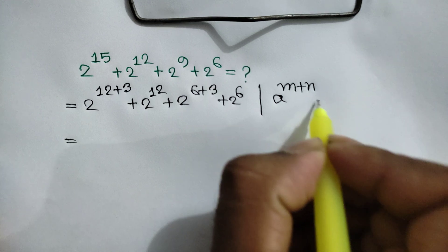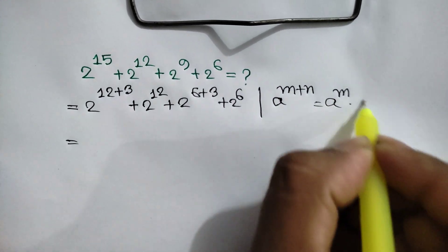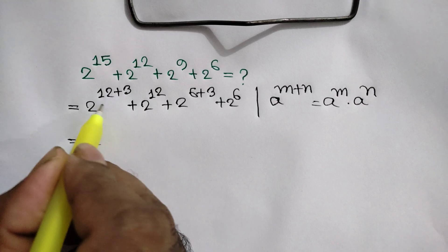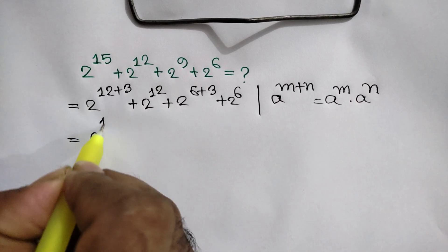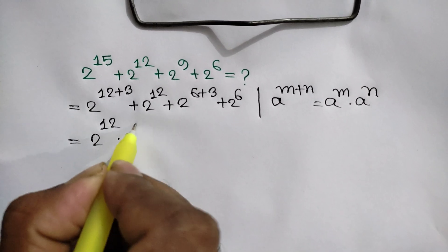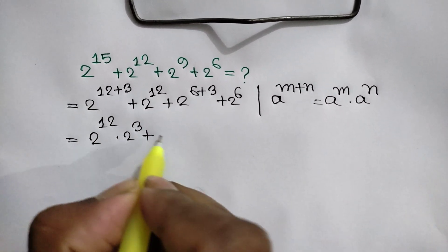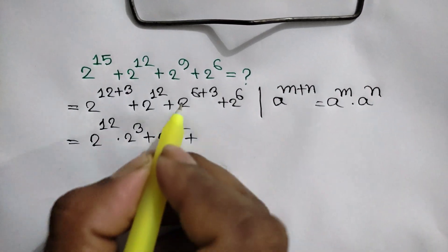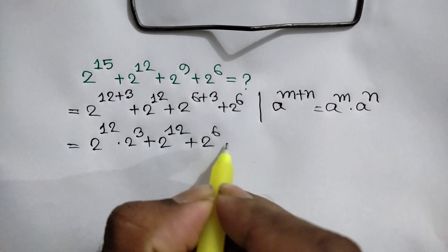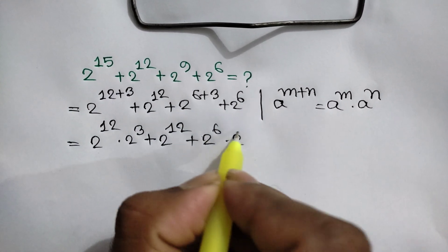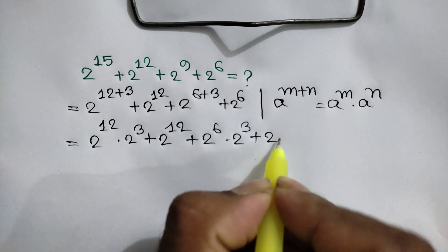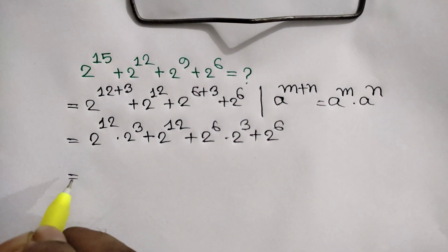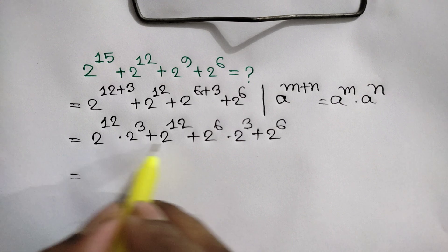Now we know that a to the power m plus n is equal to a to the power m times a to the power n. Applying this rule, we can write 2 to the power 12 times 2 to the power 3, plus 2 to the power 12, plus 2 to the power 6 times 2 to the power 3, plus 2 to the power 6.